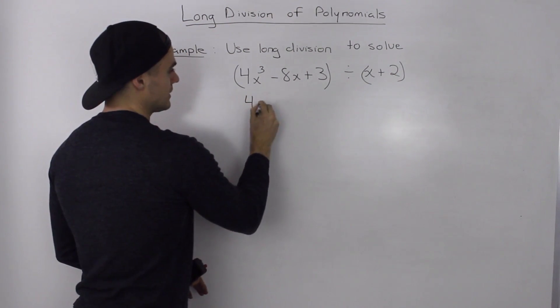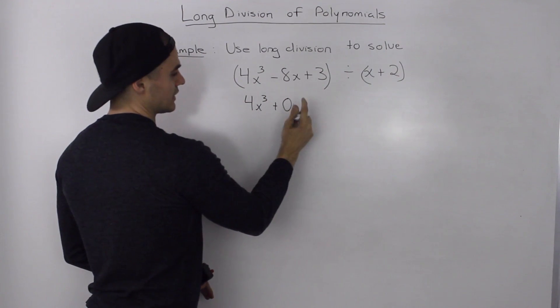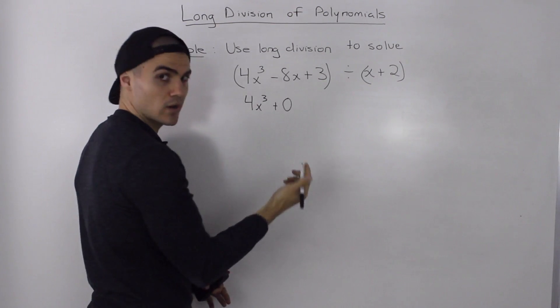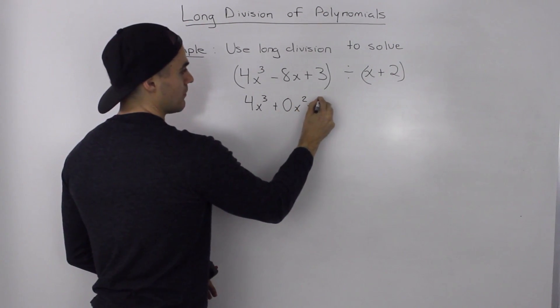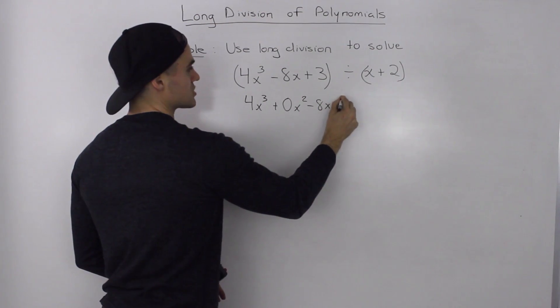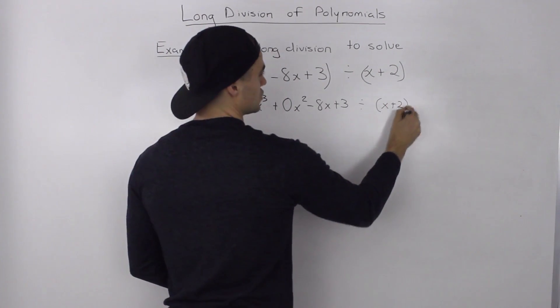So in this case, x squared is missing, so we would put plus 0x squared minus 8x plus 3 divided by x plus 2. And the reason that we do this is because when we do our division and we're doing our vertical subtraction, it's going to be a lot easier to do.